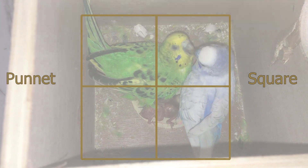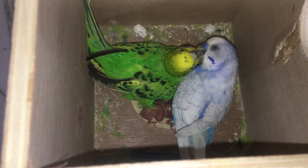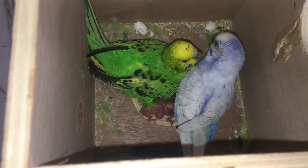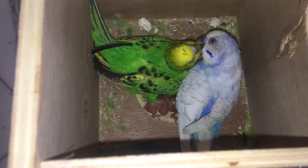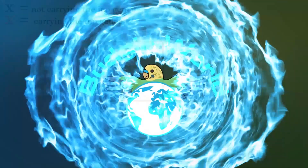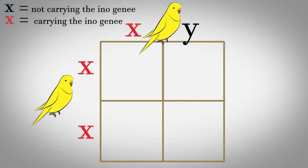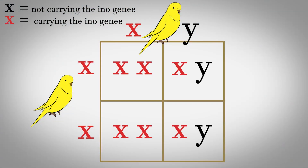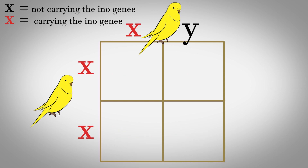From the ino and opaline gene videos we have already covered a lot of possibilities. For example, having two cinnamons is like having two inos, which means all the offspring will be cinnamon. So let's cover another possibility that we haven't covered in the ino or opaline videos.